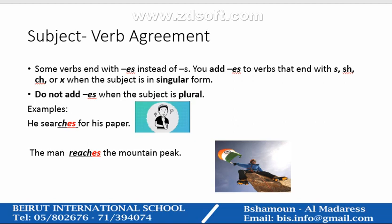Example: he searches for his paper. "He" is a singular subject, so the present tense verb "search" takes "-es" because the subject is singular. The man reaches the mountain peak. There's only one man, so "the man" is a subject in singular form. The verb "reaches" takes "-es" because it ends with "-ch".